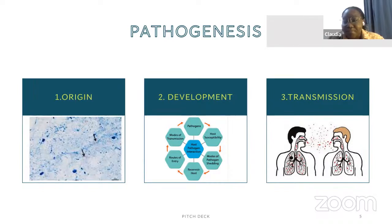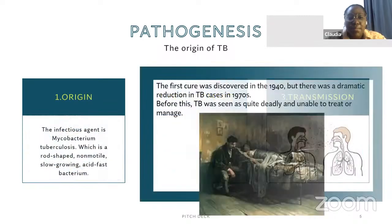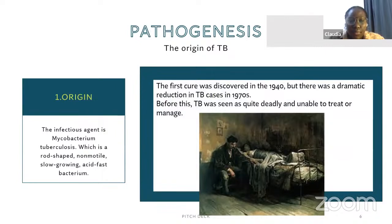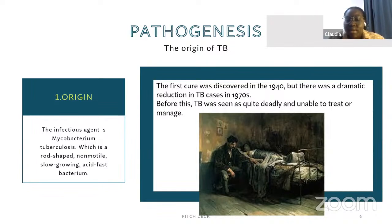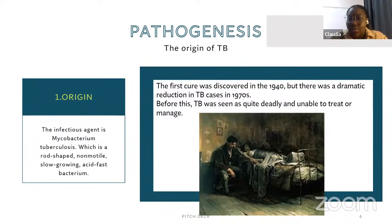Moving on to pathogenesis — how we look at the origin, development, and transmission. The infectious agent, the bacteria, is called Mycobacterium tuberculosis, and it is a rod-shaped, non-motile, slow-growing, acid-fast bacteria. Non-motile means it doesn't move. Acid-fast means we're able to see it under the microscope — it shows a certain pigment. The first cure was discovered in 1940.